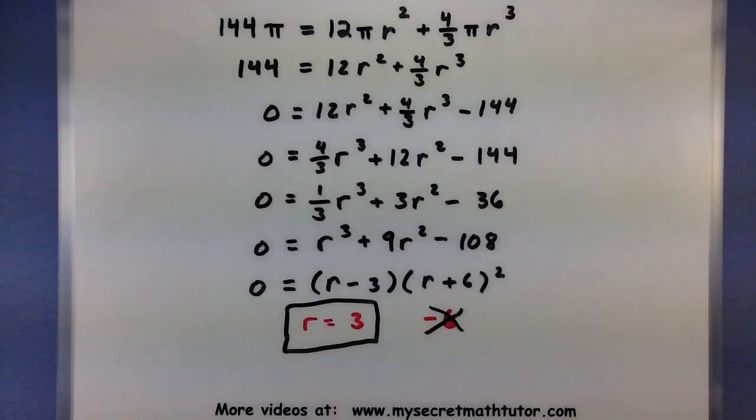So as you can see, with word problems involving a polynomial equation, you simply go through the solving process of solving those polynomial equations, factor and find your zeros. For more videos, please visit MySecretMathTutor.com.